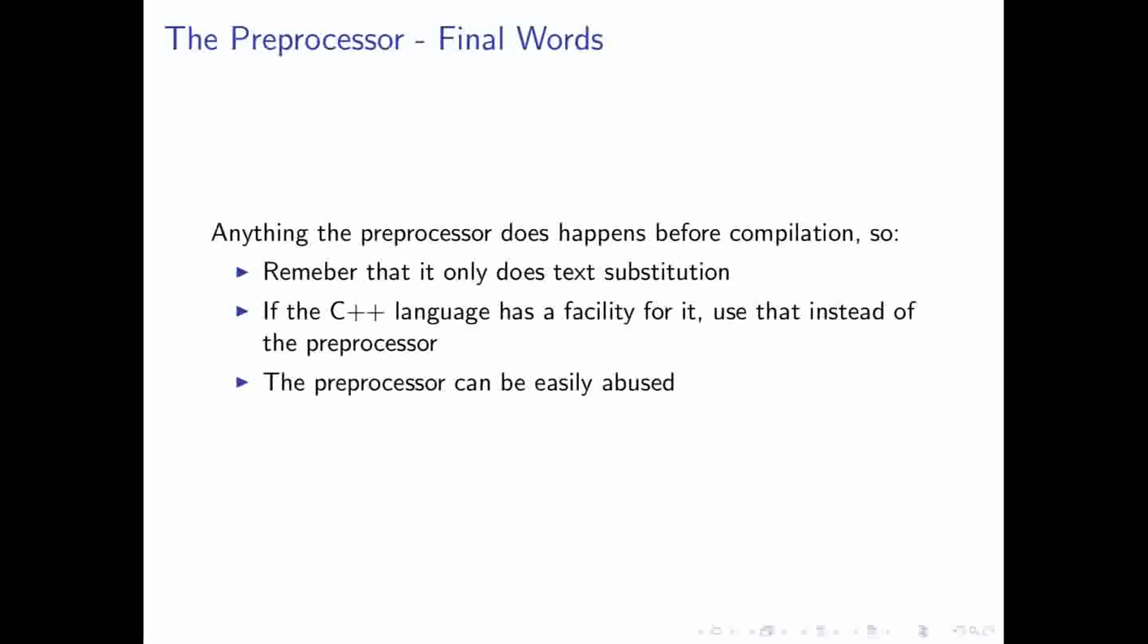So, just a couple of final words about the preprocessor. Anything that the preprocessor does actually happens before compilation. And the preprocessor actually doesn't do anything as far as generating your object code. And so, remember, it only does text substitution. And because of that, if you have a functionality in the C++ language that you want to use, then it's often better to use that instead of the preprocessor to do it for you. And because of this, it's often said that the preprocessor can be easily abused. Some might even go as far to say that it's evil. Either way, it performs some useful functions that we need before we actually start compiling.